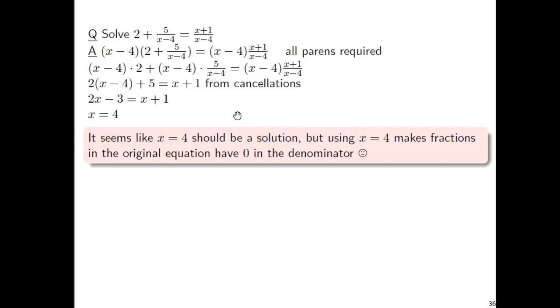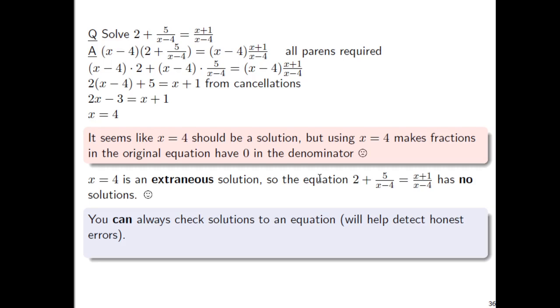Now, it seems like x equals 4 should be a solution to this equation. However, there's something kind of sticky going on here. Using x equals 4 makes the fractions in the original equation at the very top become 0. If you plug in 4 for x, you have 5 over 0. So 0 in the denominator, dividing by 0 is actually a problem. You actually have the situation where x equals 4 is an extraneous solution. It means that the only solution that we thought we had is not actually a solution at all.